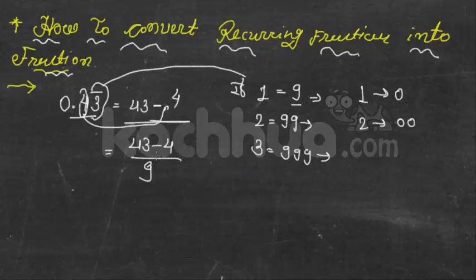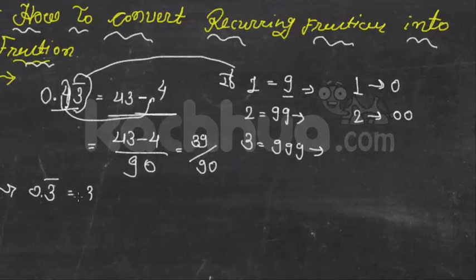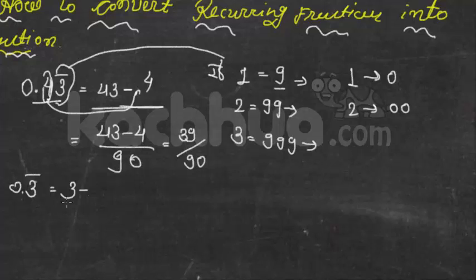Now second example is 0.3 bar. Here after decimal point 3 minus without bar 0 upon. Here one number has bar so put 9, so put 9 is equal to 3 by 9.